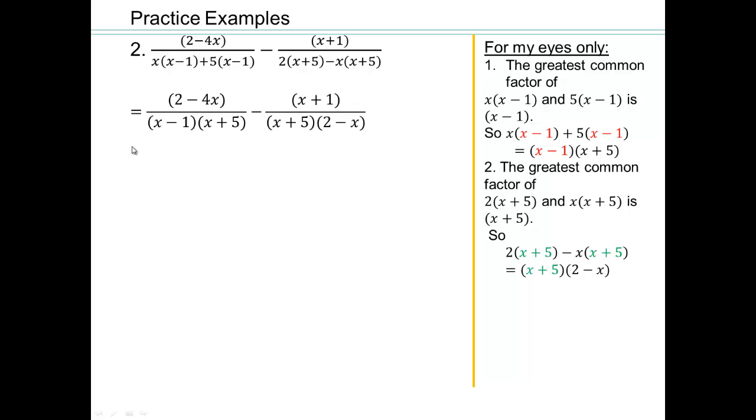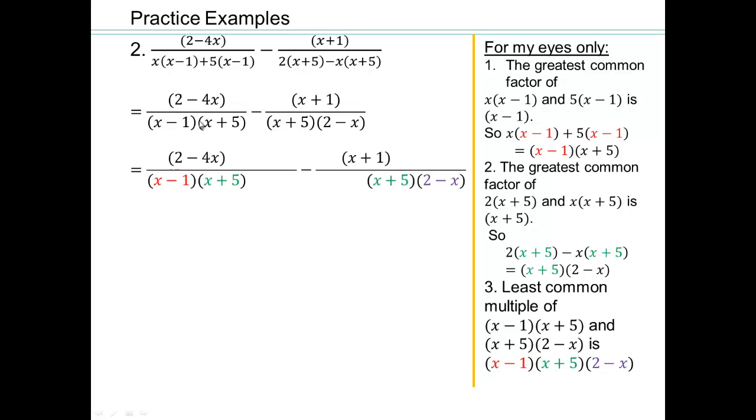Now we have to find what? We have to make a common denominator across here, which means we have to find least common multiple. So let's do that. So least common multiple of x minus 1, and x plus 5, x plus 5, and 2 minus x. So we're going to have x minus 1, x plus 5, 2 minus x. So let's see what we have here. x minus 1 is there. x plus 5 is there. We're missing 2 minus x's. What are we missing here? We're missing x minus 1's.